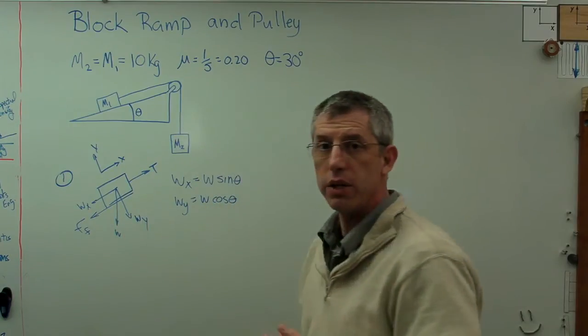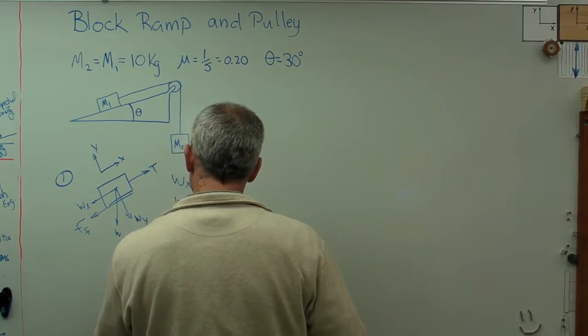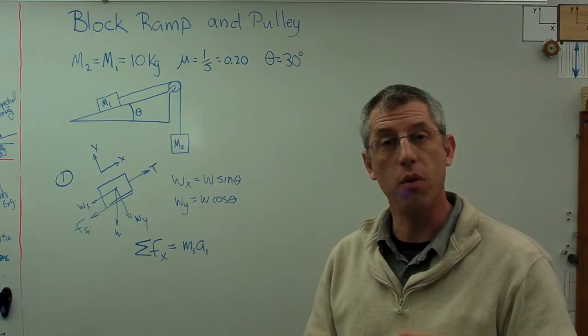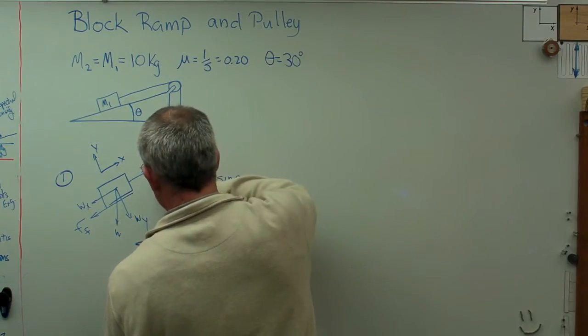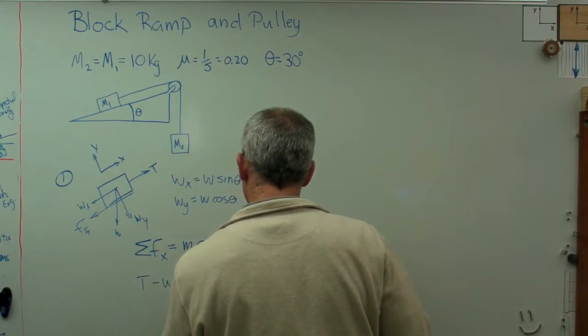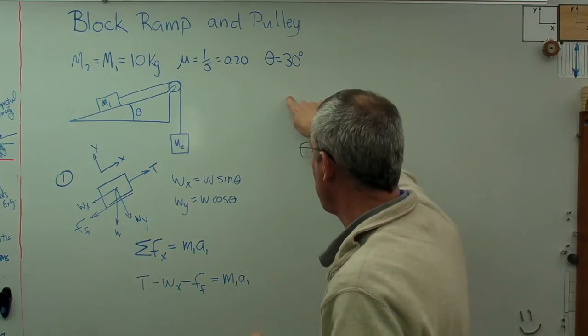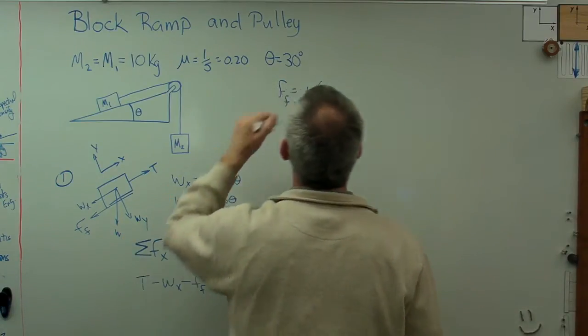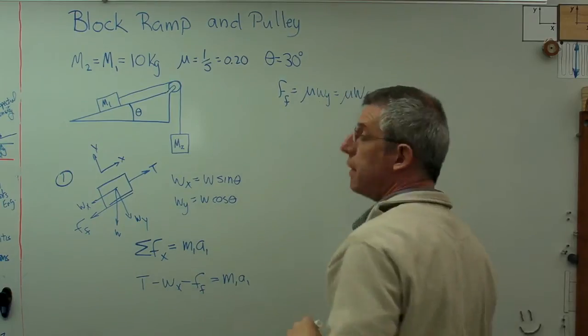Let's write out the equation of motion in the x direction. Sum of forces in the x direction equals m1 a1. We've got two accelerations because we've got two different masses, so I'm going to have an a1 and an a2 here. Forces in the x direction: T is positive minus wx minus the friction force, and that equals m1 a1. The friction force is mu times the normal force, which is just w sub y, so that's mu w cosine theta.